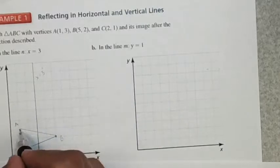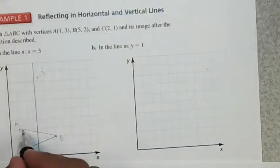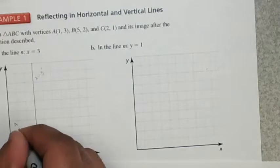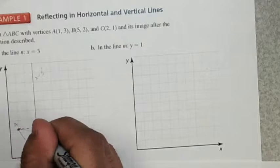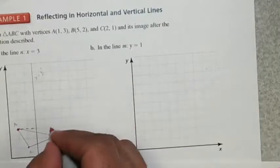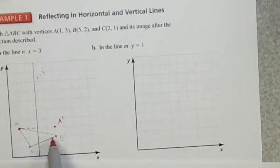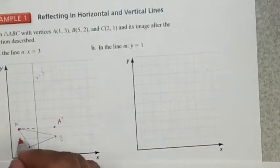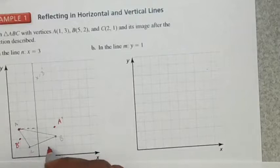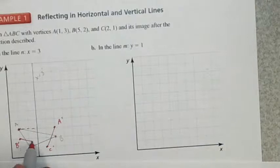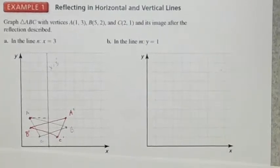Notice that from A, it's two units from the line x equals 3. Since this is a vertical line, I measure horizontally. A is two units away, so on the other side I go two units — this becomes A prime. B is two units away in the other direction, so flipping over, two units gives me B prime. C is one unit away, so going one unit to the other side gives me C prime. Connecting those three points gives me the image A prime, B prime, C prime.